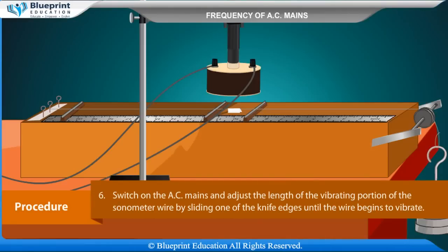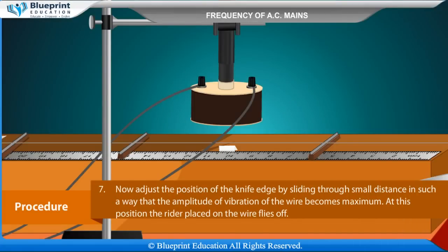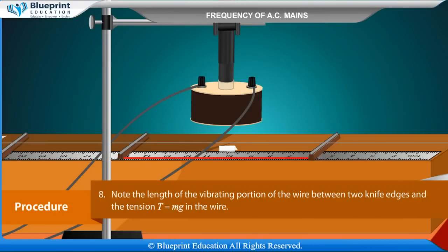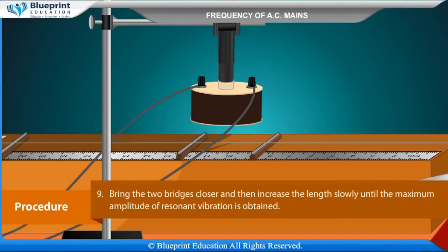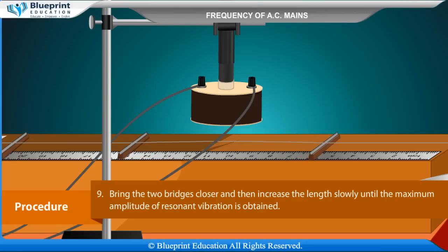Switch on the AC mains and adjust the length of the vibrating portion of the sonometer wire by sliding one of the knife edges until the wire begins to vibrate. Adjust the position of the edge so that the amplitude of vibration becomes maximum. At this position, the rider placed on the wire flies off. Note the length of the vibrating portion between the two knife edges and the tension T = mg in the wire.